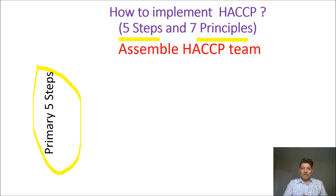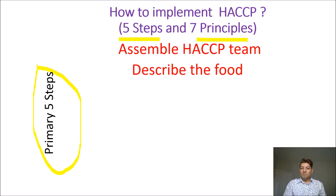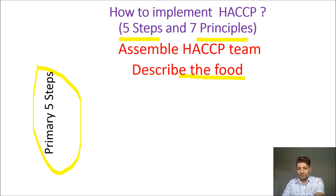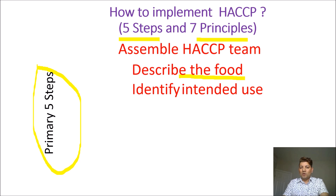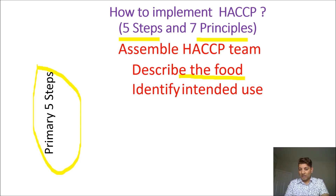The second step is description of the food — you need to define your food. What type of food are you making? Is it shelf-stable? You need to consider special protection, special packaging material, and special instructions for the consumer. What ingredients and packaging materials are you using? You need to define all these factors, and then identify the intended use — where you are going to sell, whether it is for a vulnerable group like children, pregnant women, elderly people, or for a specific food therapy like nutraceutical food. Are you selling to a ready-to-eat market or a wholesale market?